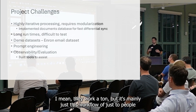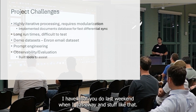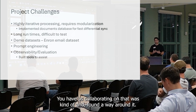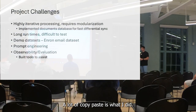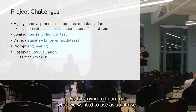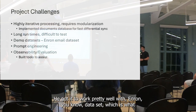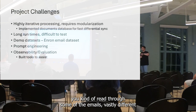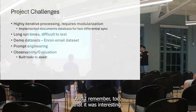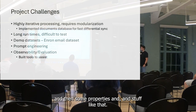Project challenges — there weren't a ton, but it was mainly just this workflow of two people whenever they could. Trying to iterate, especially when we started in Jupyter Notebooks, collaborating was kind of a pain. Found our way around it — a lot of copy-paste. Work email was kind of a gray area, so trying to figure out what we wanted to use as a data set. He got it to work pretty well with the Enron email data set, which is vastly different from the way we communicate over email now.